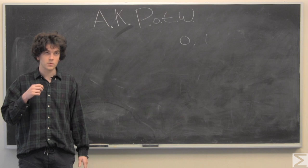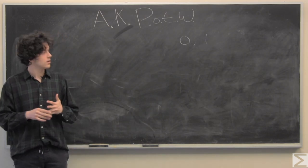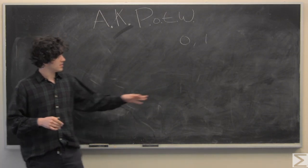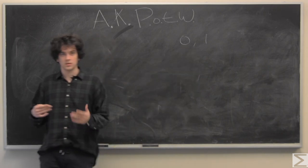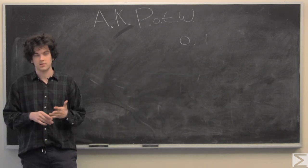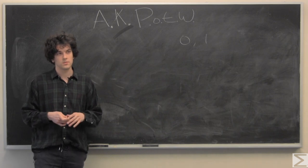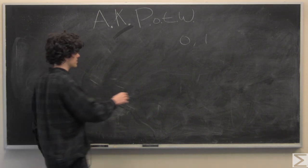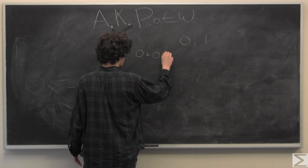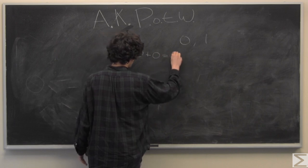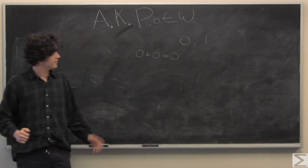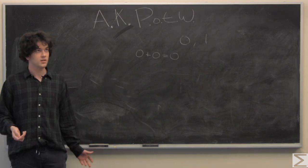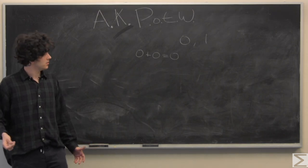We're going to start with the additive inverse, which means that it's a number which we would add to an element in our field that will return 0. Easy for 0, we're just going to put 0, and for 1, we're just going to say that 1 plus 1 equals 0.